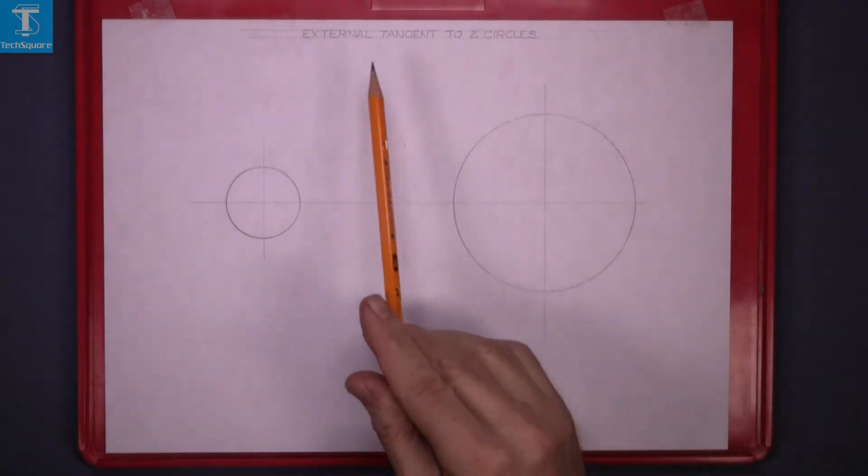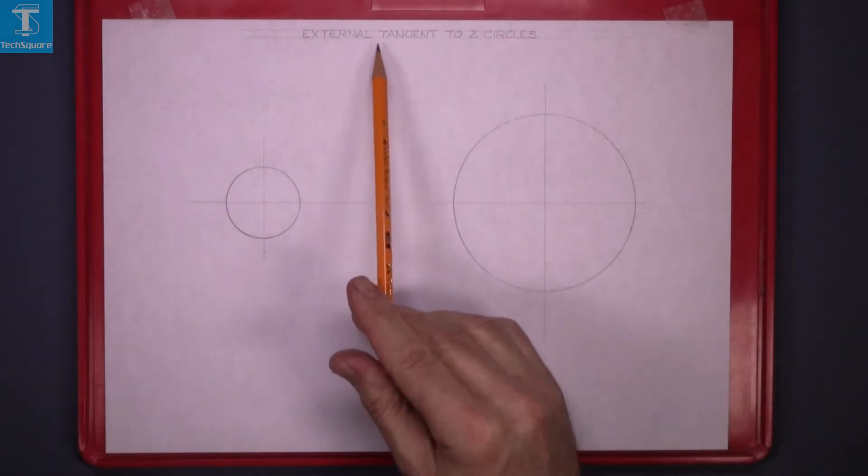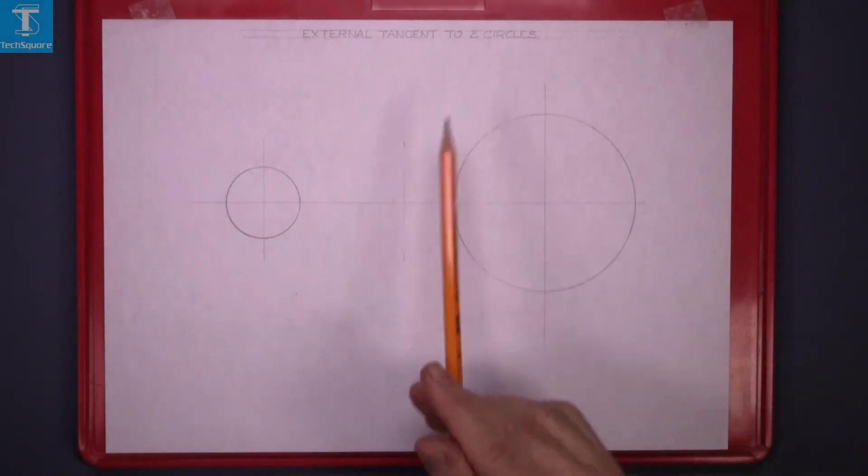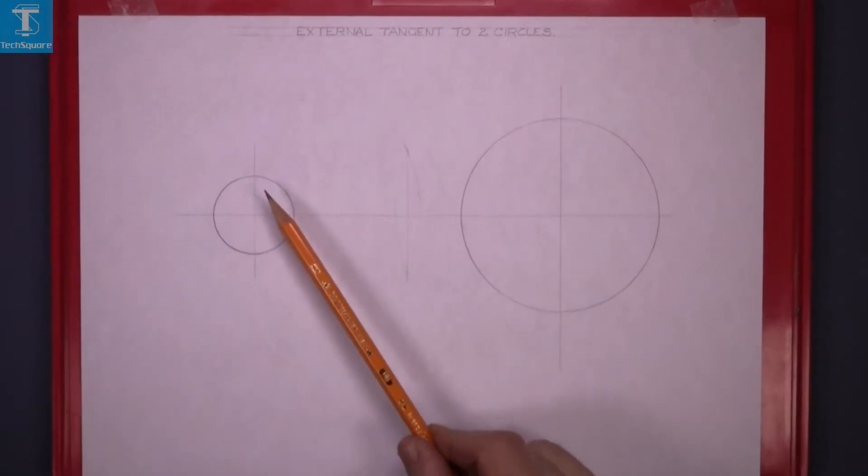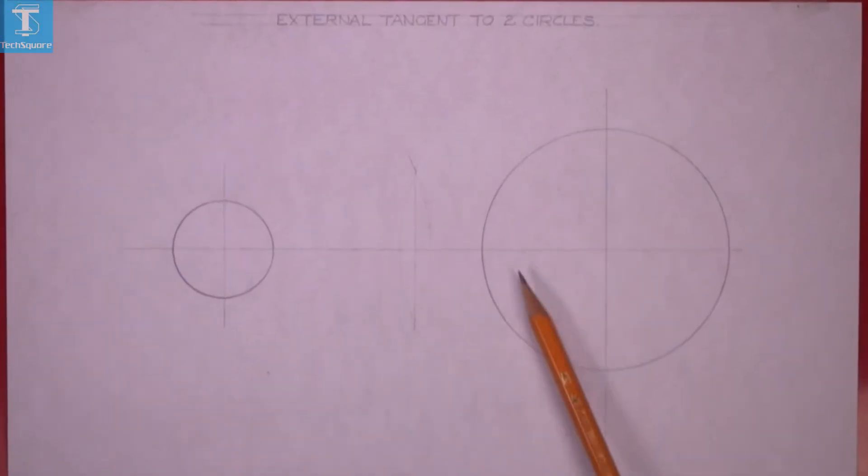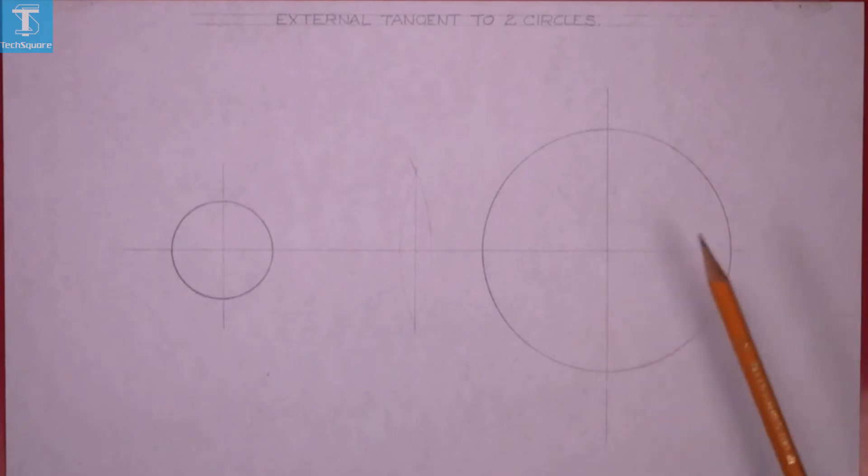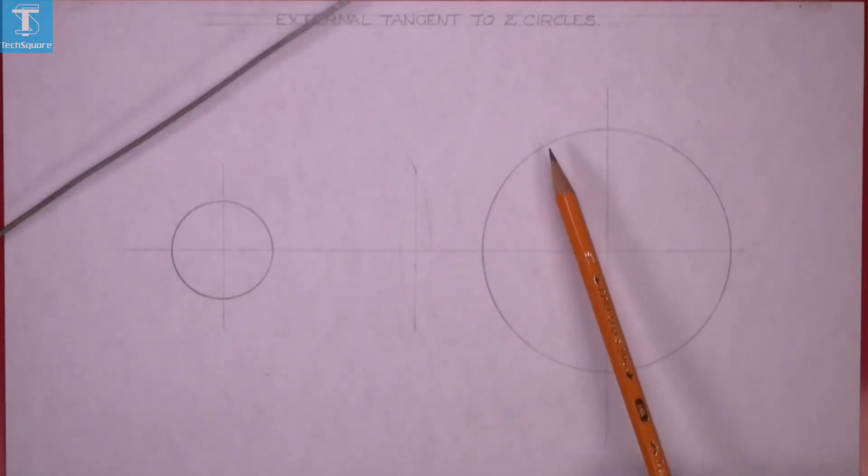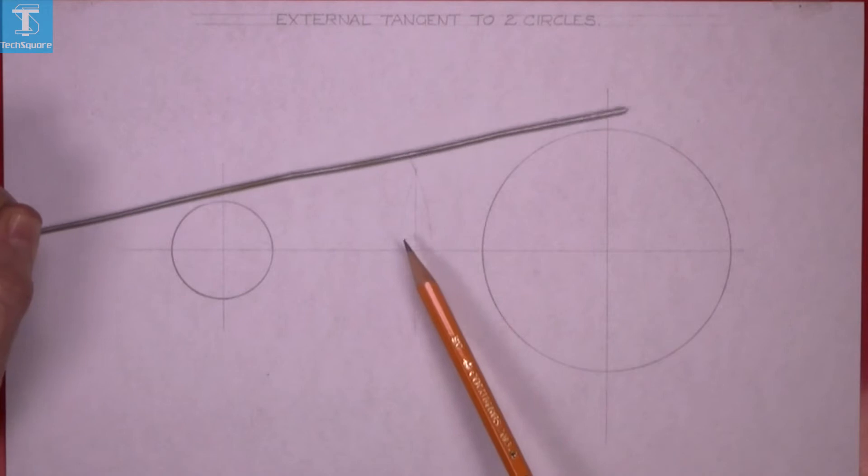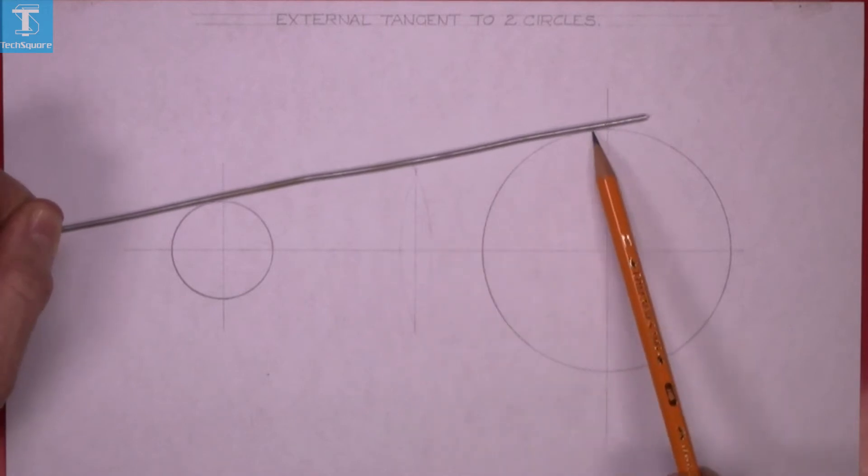This exercise is to draw an external tangent to two circles. We have two circles here in this position. An external tangent is a tangent drawn from the top of one circle to the other. I'm using a piece of wire here just to show the position we want.